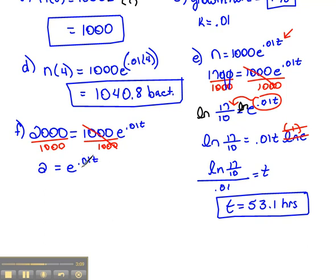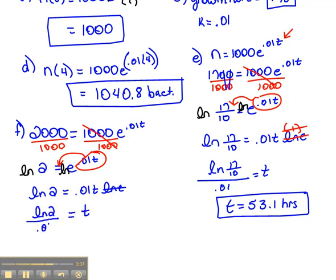And in order to get that exponent to come down, we have to introduce logs. So I'm going to take the natural log of both sides, which will let me bring that exponent down in front. So now we have the natural log of 2 equals 0.01 T natural log E. And again, because the natural log E is 1, we don't have to really worry about that. So T will equal the natural log of 2 divided by 0.01.